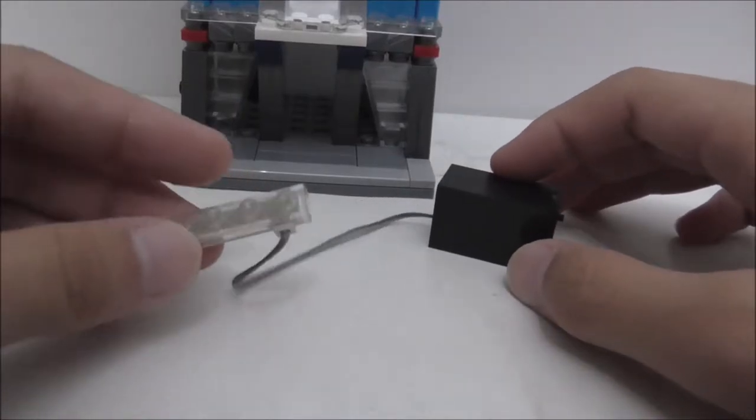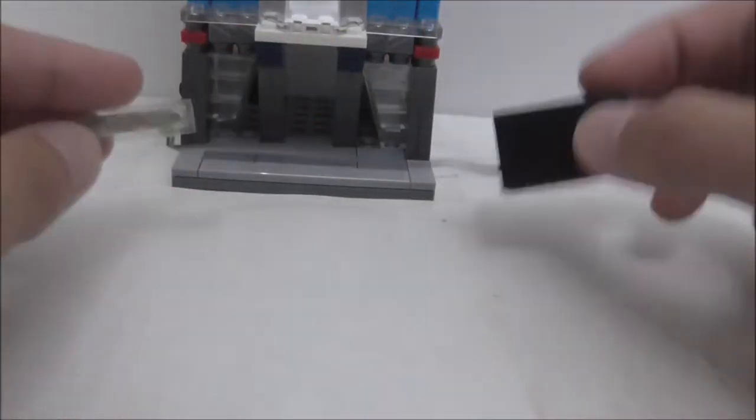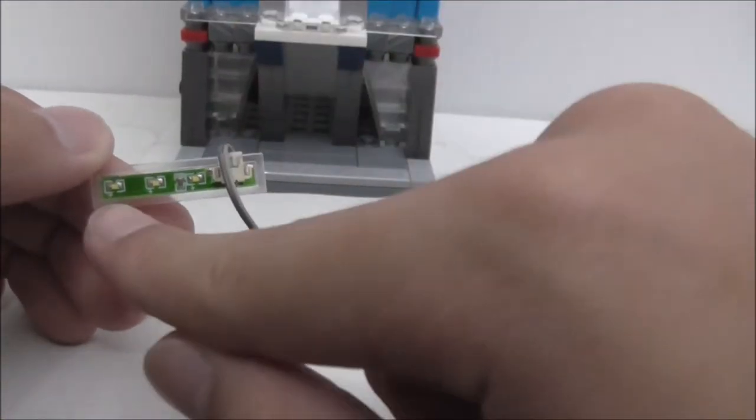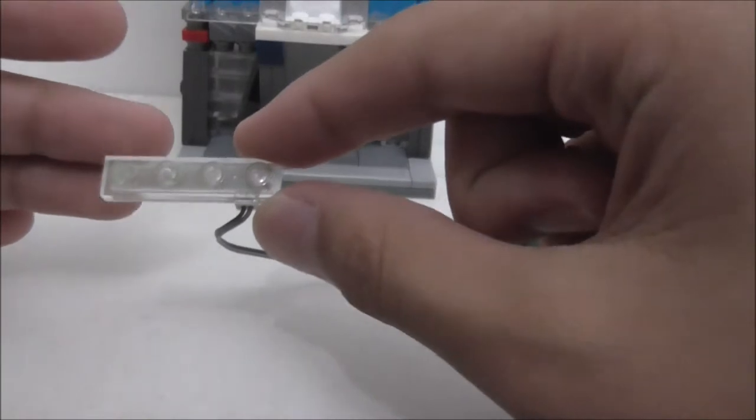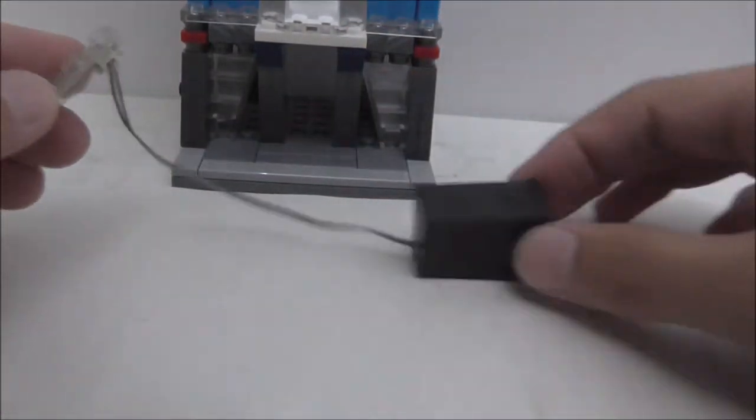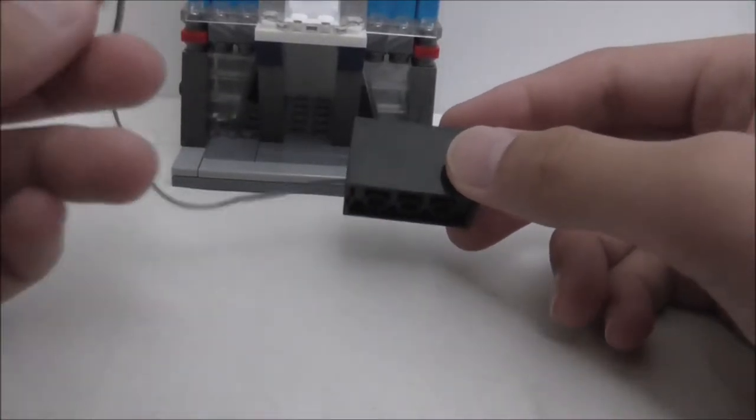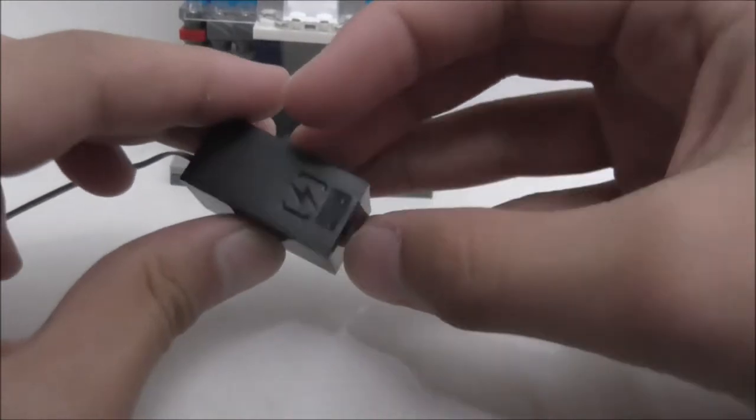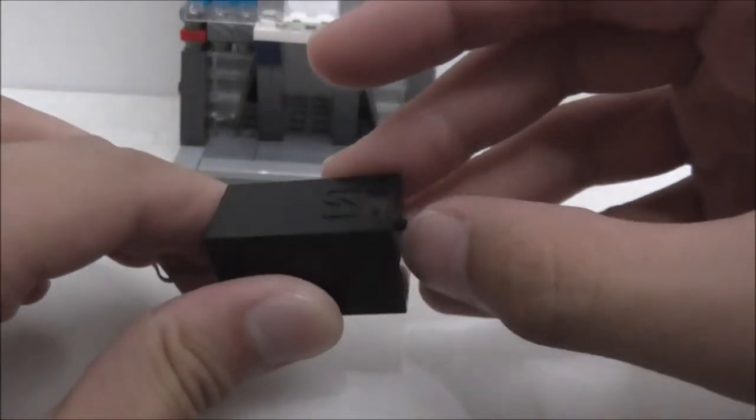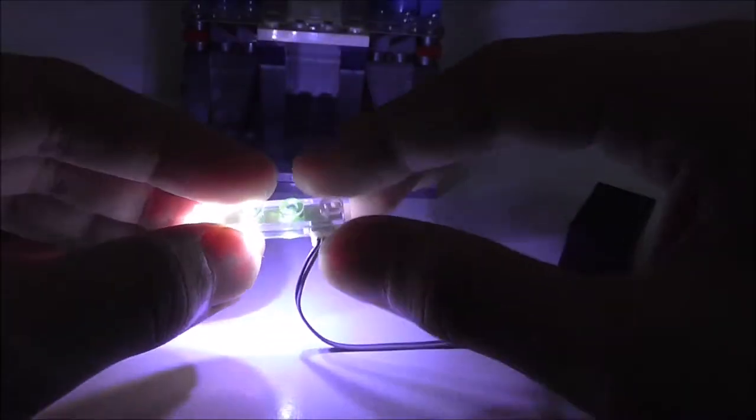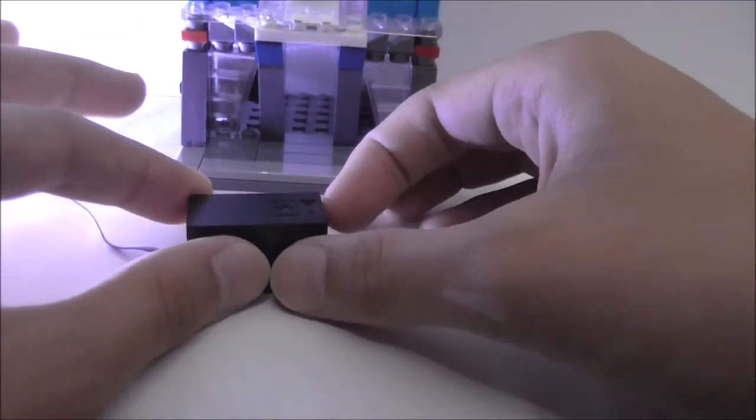This is the light brick itself. You got the battery box here with this wire going to this one by four transparent piece. It's basically some lights strapped onto this piece. The wiring is kind of annoying but you have to have it because the technology is just not that advanced yet. You got this on and off switch. It's actually pretty bright, it lights up great.